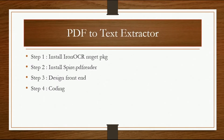I have divided this project into 4 main parts. Step 1 is to install the Iron OCR NuGet package. Step 2 is to install the Spire.PDF reader. Step 3 is to design the frontend — we are installing Spire.PDF reader so that the user can also view the PDF they have selected. Step 4 will be the coding. So let's start.